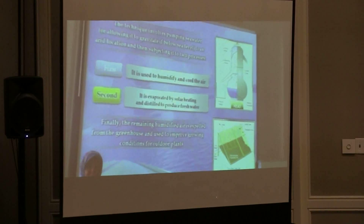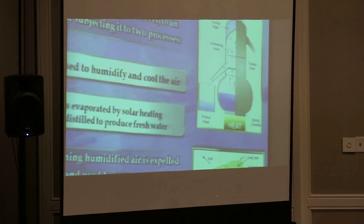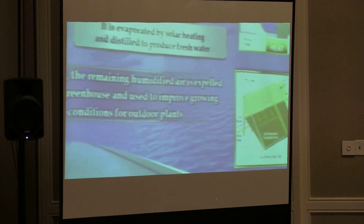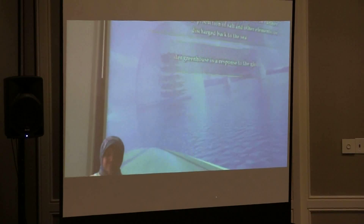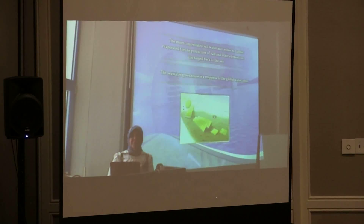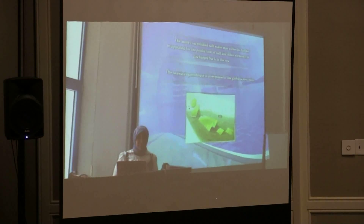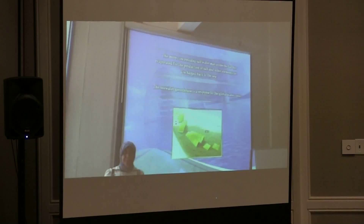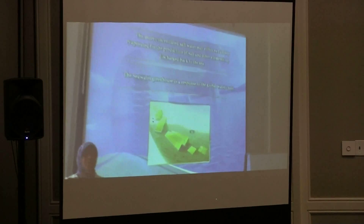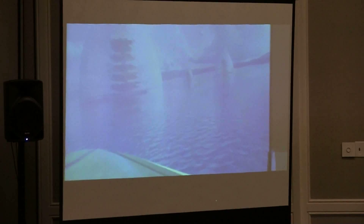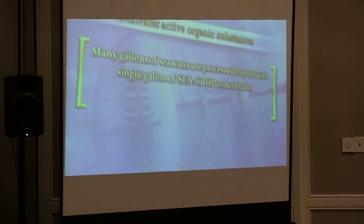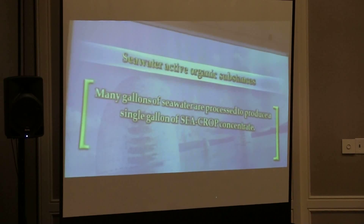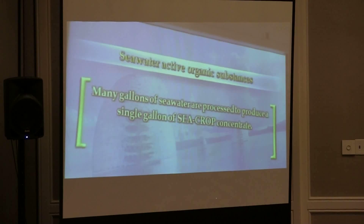Finally, the remaining humidified air is expelled from the greenhouse and used to create humid growing conditions for outdoor plants. The more concentrated salt water may either be further evaporated for the production of salt and other minerals, or discharged back to the sea. Actually, the sea water greenhouse is a response to the global water crisis.